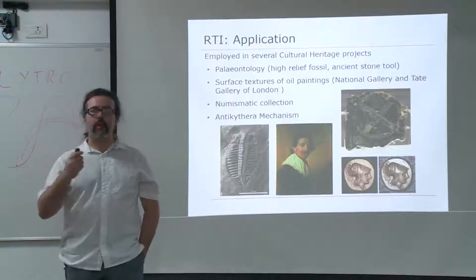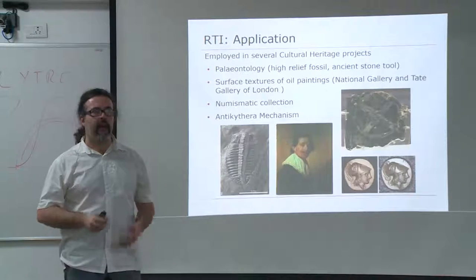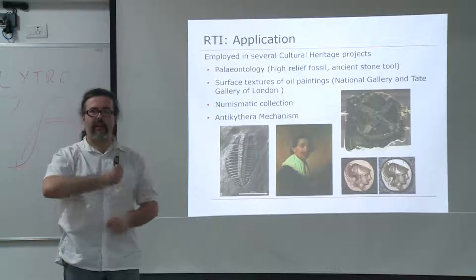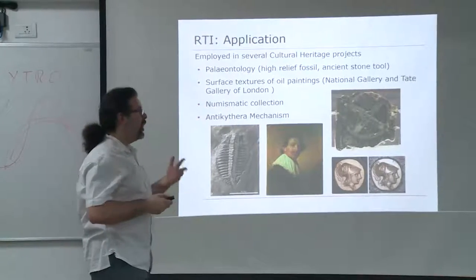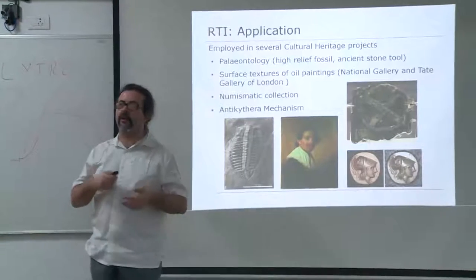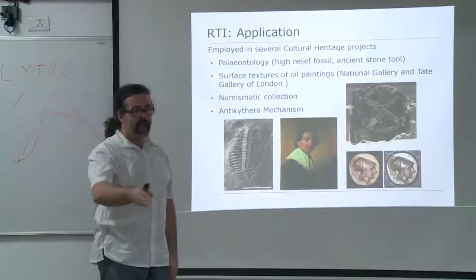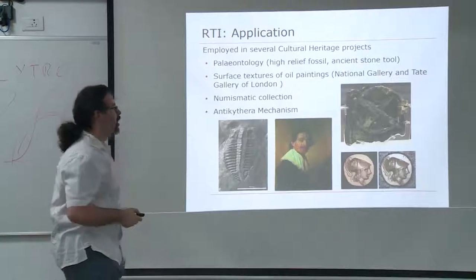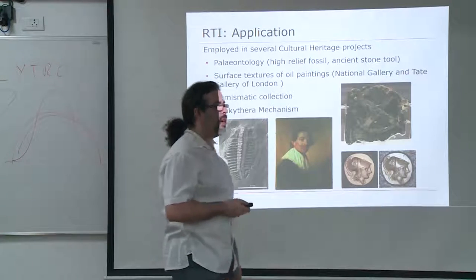The kind of things that you want to see are imperfections in the die process — so in the coin ages, when they are pressed — they are not always perfect. Those imperfections are the things that are normally studied to determine the age of the coin, the provenance of the coin, and the relationship between different coins.